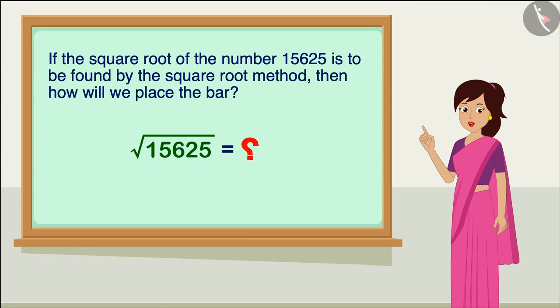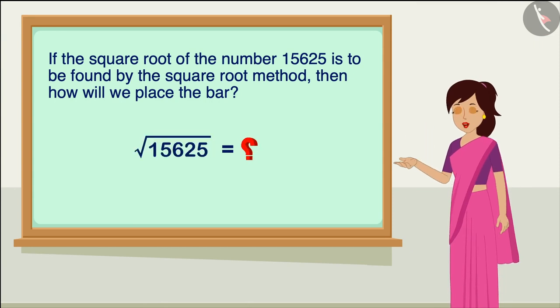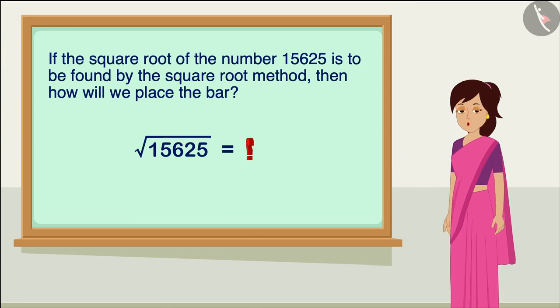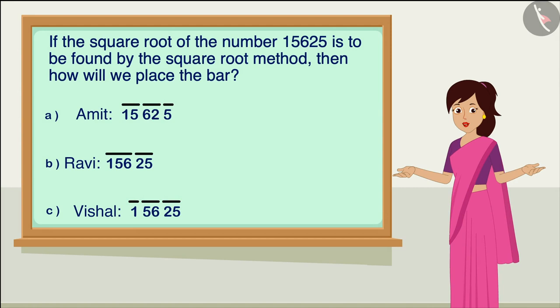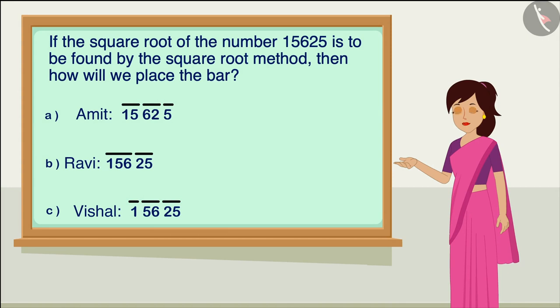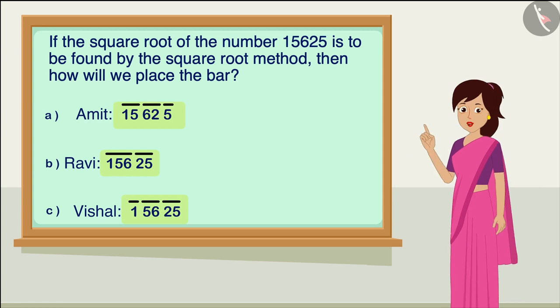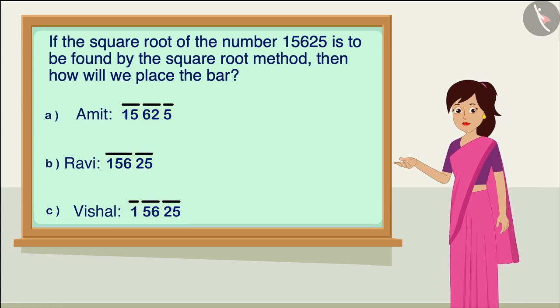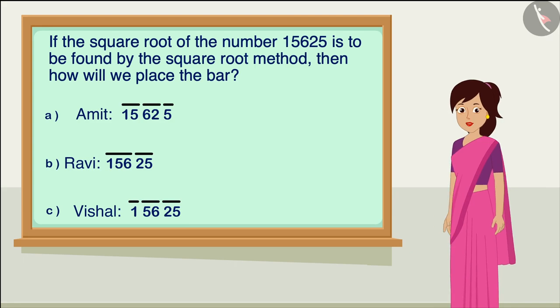A teacher asked his students to find the square root of the number 15,625 using the division method. Three students—Ravi, Amit, and Vishal—completed the first step of placing the bar on the digits of the perfect square number. The responses of the three students are given below. Can you tell which of these is correct? If you want, you can solve the question by stopping the video here.